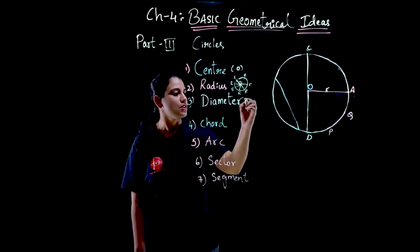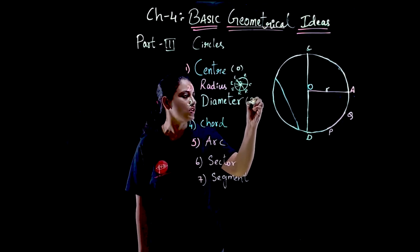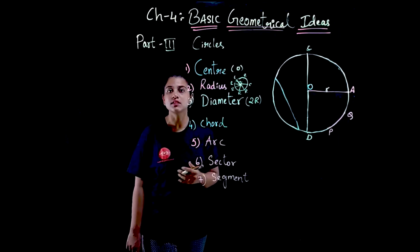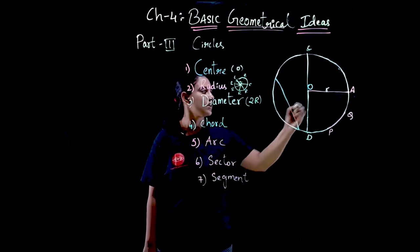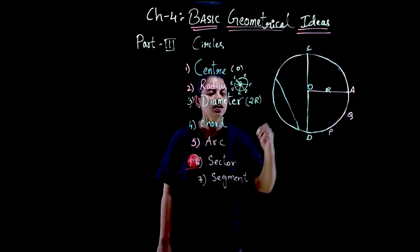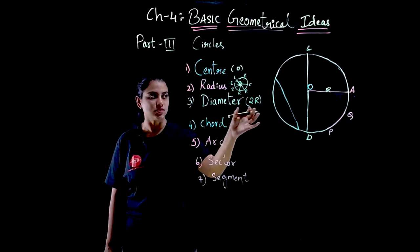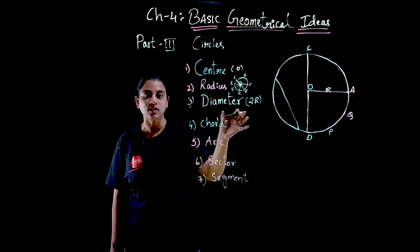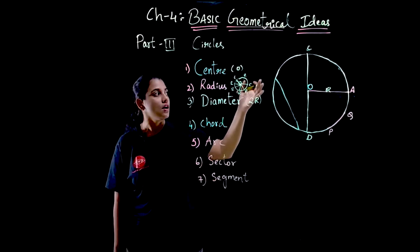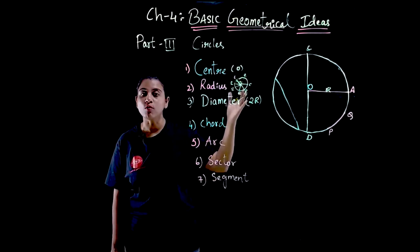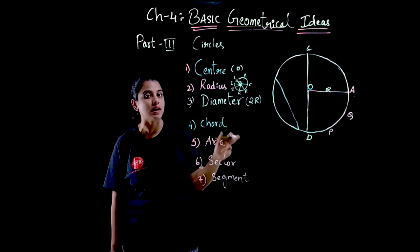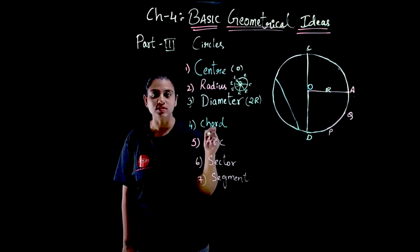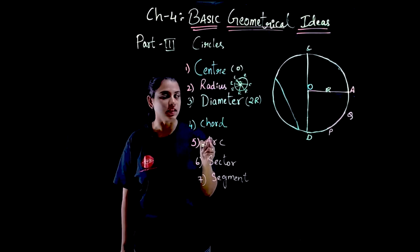Diameter is double the radius, or you can say radius is half of the diameter. So diameter = 2 × radius. The very important definition of diameter is that it passes from one point to another point through the center. Now let us move towards chord. Chord also passes from one point to another point.